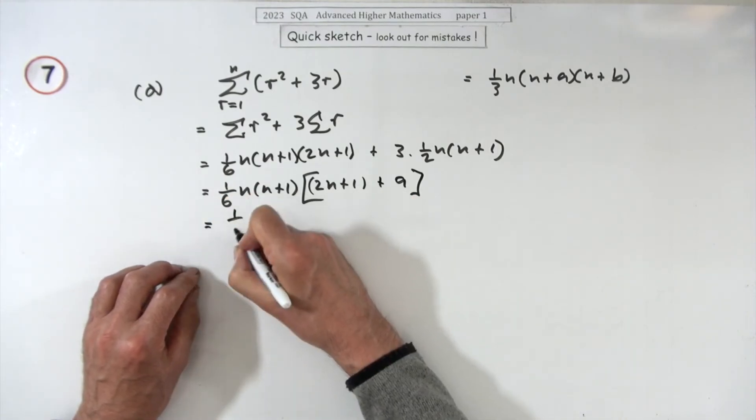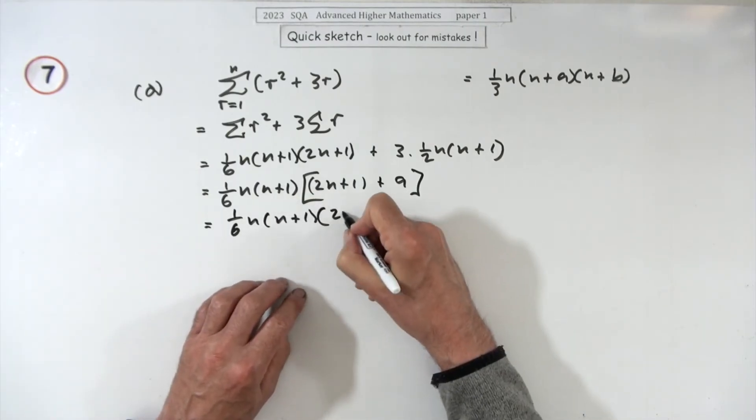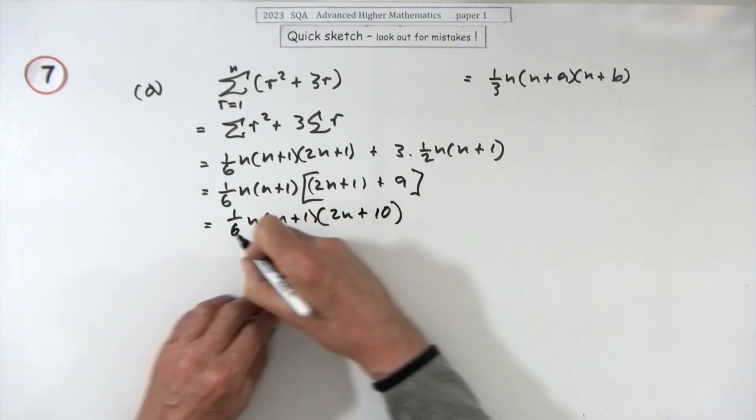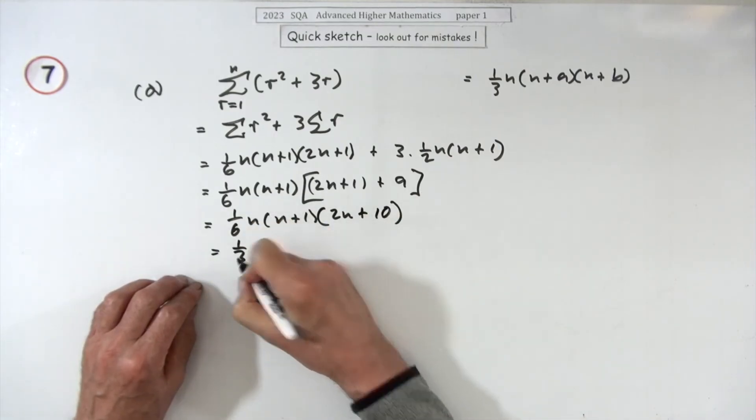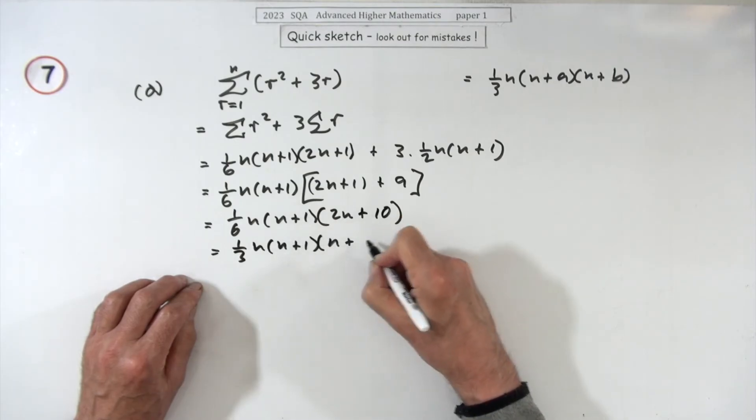So tidying that up gives you, we'll just have to leave it n, n plus one times, and that's going to be two n plus ten. Common factor of two, take it out, that now produces your third n, n plus one, n plus five.